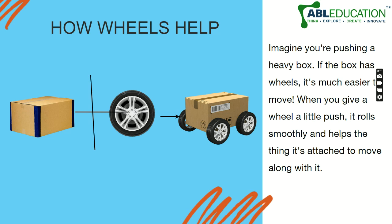Imagine you are pushing a heavy box. If you push or pull a heavy box along the ground, it is very difficult and requires a lot of force. But if you attach four wheels and axles to the box, it becomes much easier to push or pull. So the wheel is a kind of machine — the combination of wheel and axle makes our work easier.